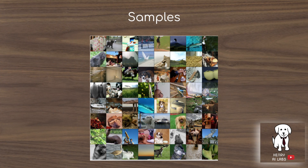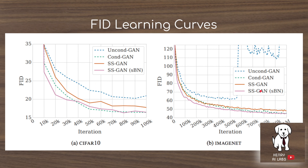These are samples from their best model on ImageNet — pretty convincing results given that no labels were provided to the network. They use the FID metric for measuring the quality of generated samples, where a lower score is better. As training proceeds, you sample some outputs and calculate the score.